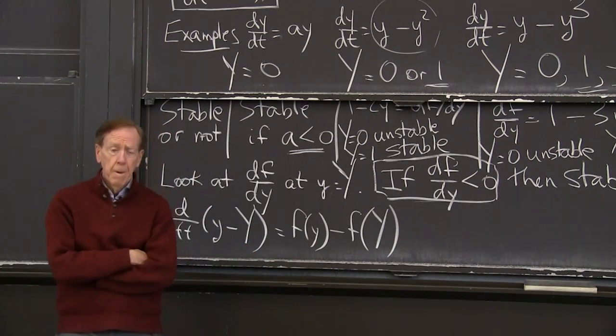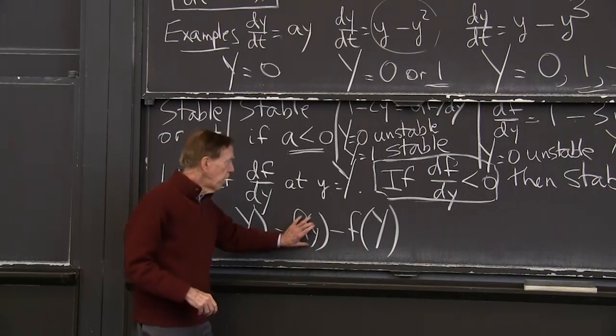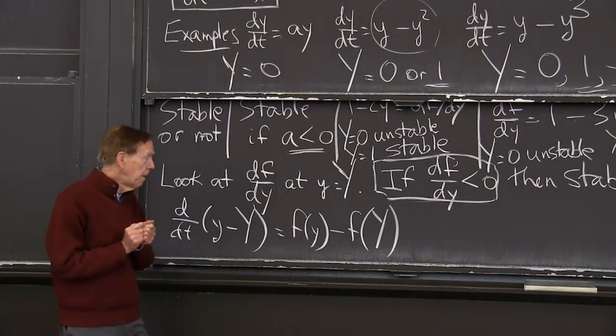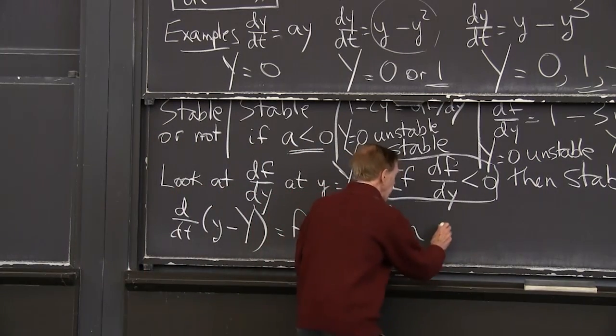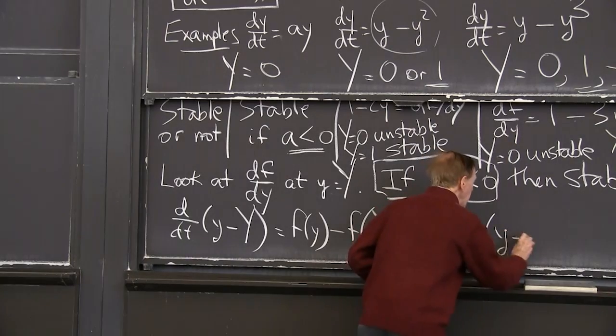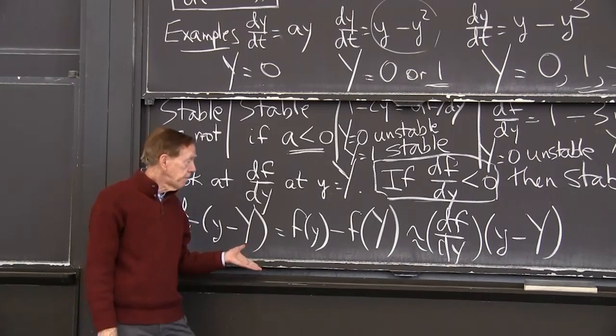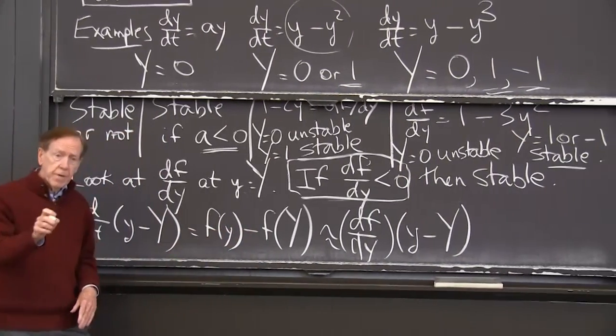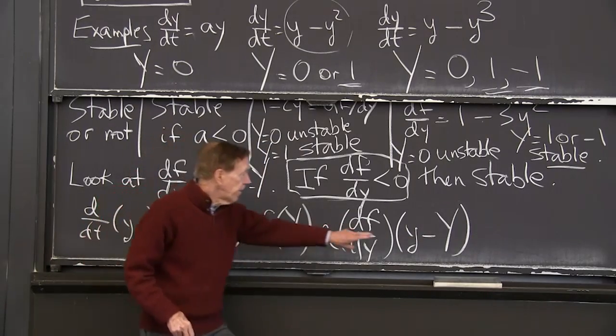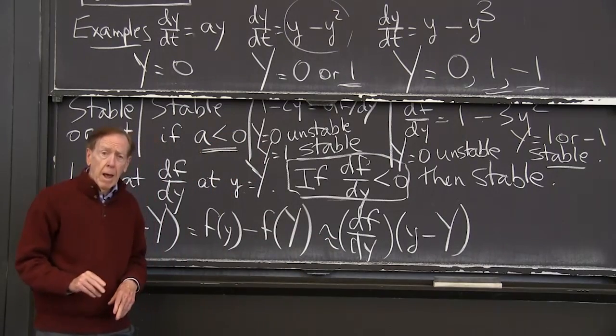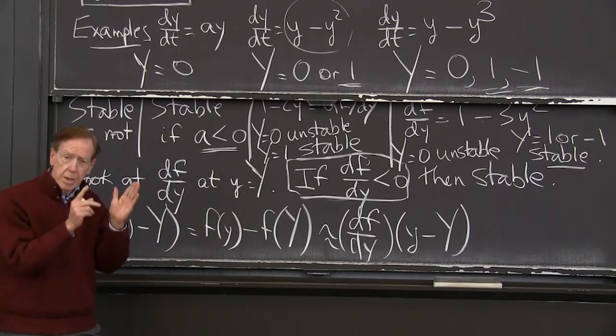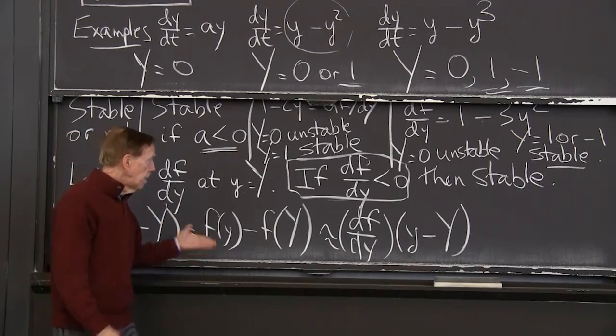Now I have f of y minus f at capital Y. I'm going to use calculus. The difference between the function at a point and the function at a nearby point is approximately, and the mean value theorem tells me that it really is, is approximately the derivative, df/dy, times y minus Y, right? That's the whole point of calculus, actually. To be able to estimate the difference between f at two points. This is delta f, if you like. And this is delta y. And delta f divided by delta y is approximately df/dy.